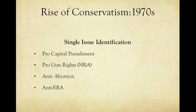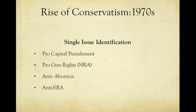In the 1970s, it was about single issues. Conservatives were pro-capital punishment, pro-gun rights, anti-abortion, and anti-ERA or Equal Rights Amendment. Whereas liberals were anti-capital punishment, in favor of gun control, pro-choice, and pro-ERA.